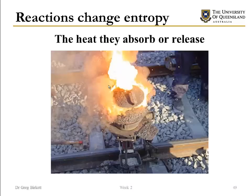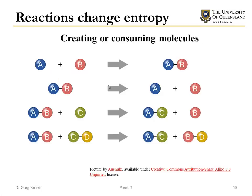Reactions change entropy. They can change entropy in a few different ways. Firstly the heat they absorb or release will cause a change in entropy. They can either create or consume molecules. So if you consume molecules, A plus B goes to a single molecule, then you're reducing entropy. AB goes to A plus B, you're increasing entropy.